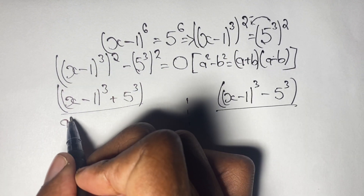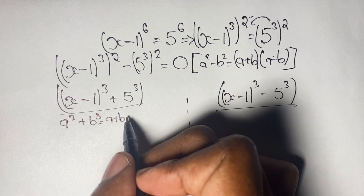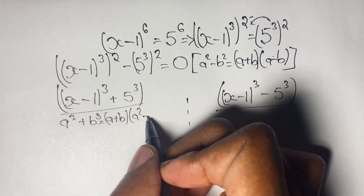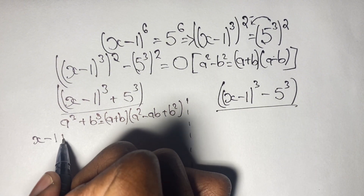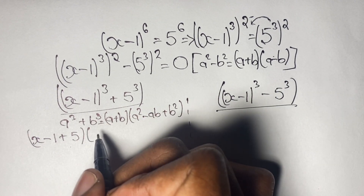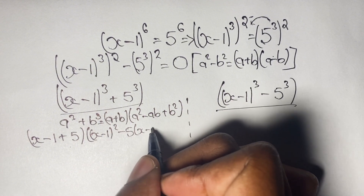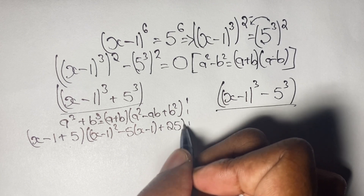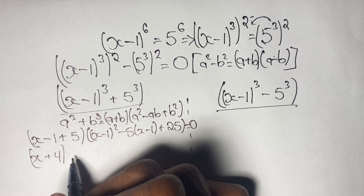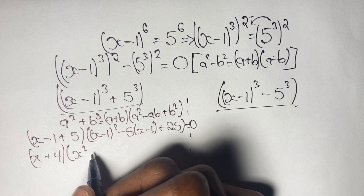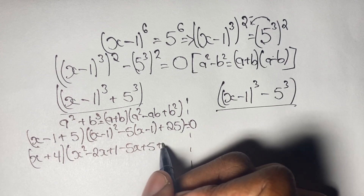We can apply the sum of cubes index law: a cubed plus b cubed equals (a + b)(a squared minus ab plus b squared). This means we can write the first factor as (x minus 1 plus 5) times ((x minus 1) squared minus 5(x minus 1) plus 25). Grouping like terms and simplifying, the first bracket becomes (x + 4).